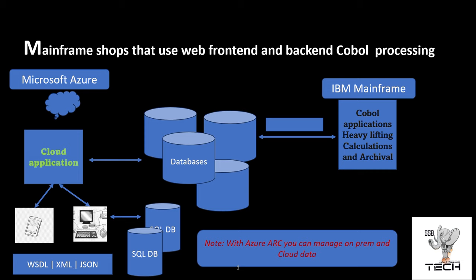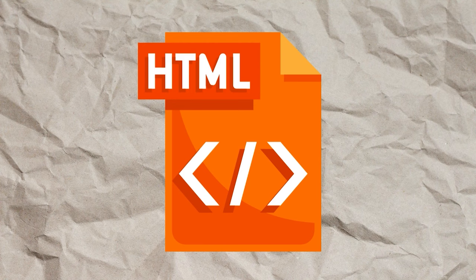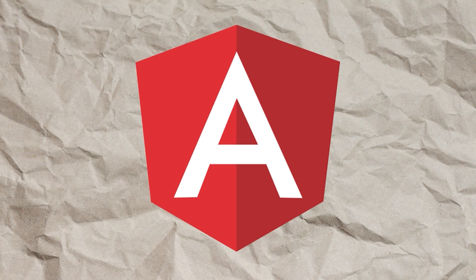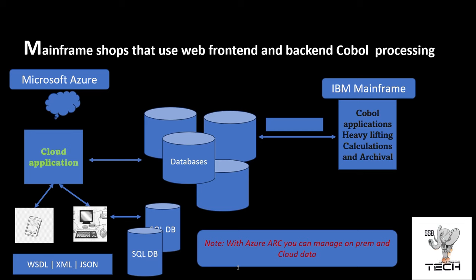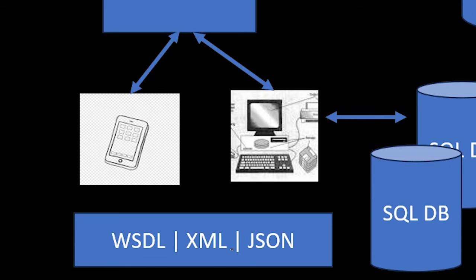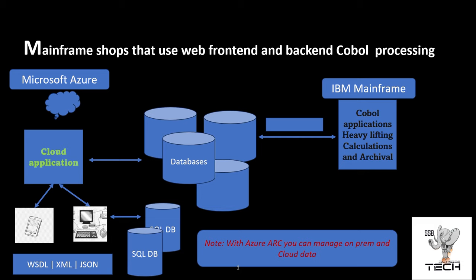If you're running an old mainframe, with the advent of phones and tablets, you have to have some kind of front-end presence that connects to those devices. A lot of companies run the mainframe in the background to do the heavy lifting — crunching numbers for customers they've had 30 or 40 years, because of government mandates to keep seven years of data. They usually have a more modern front-end that deals with JSON, XML, and WSDLs, whether you're on-prem or in the cloud.